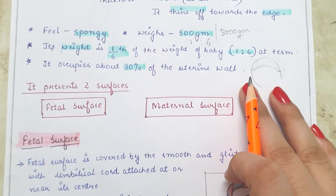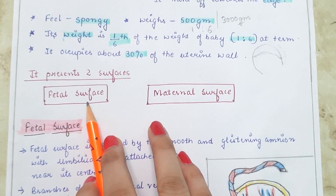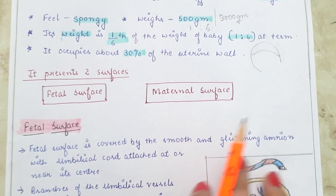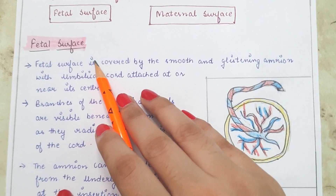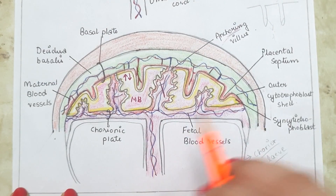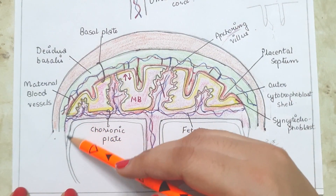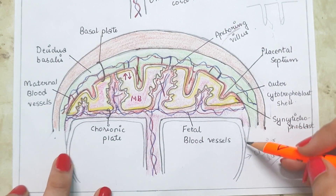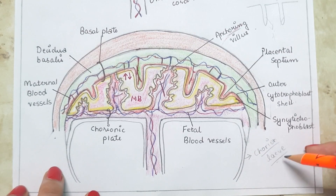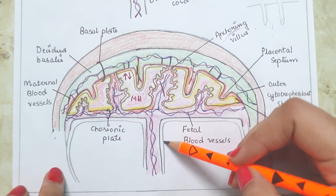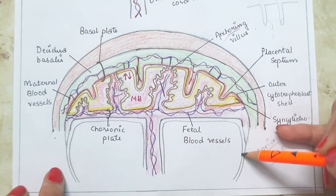The placenta has two surfaces — fetal and maternal — which I will discuss one by one. At the margins of the placenta, the chorionic plate and the basal plate fuse and continue with the chorion laeve — the smooth part of chorion without chorionic villi. The amnion lines the placenta and the uterine cavity.